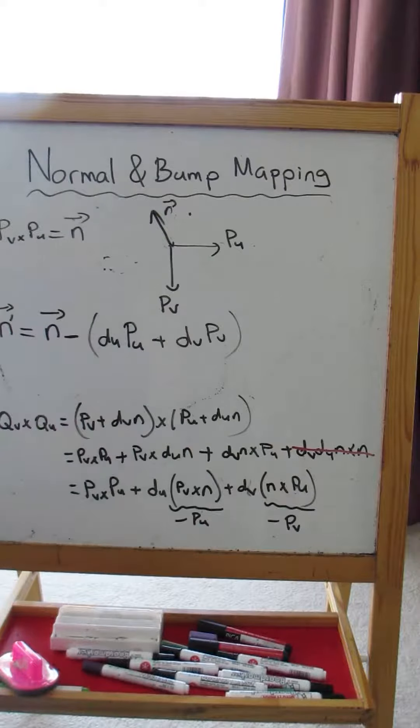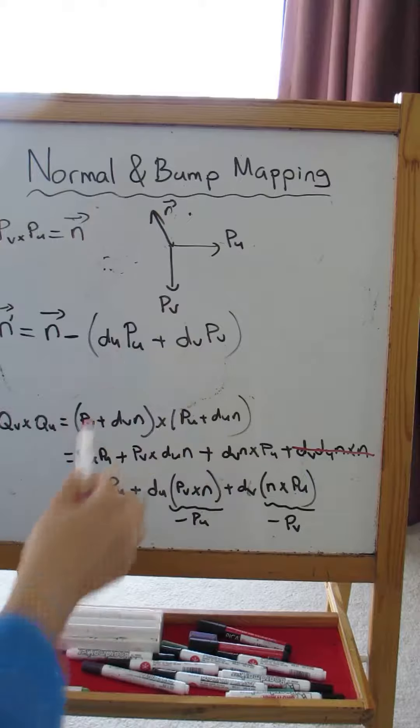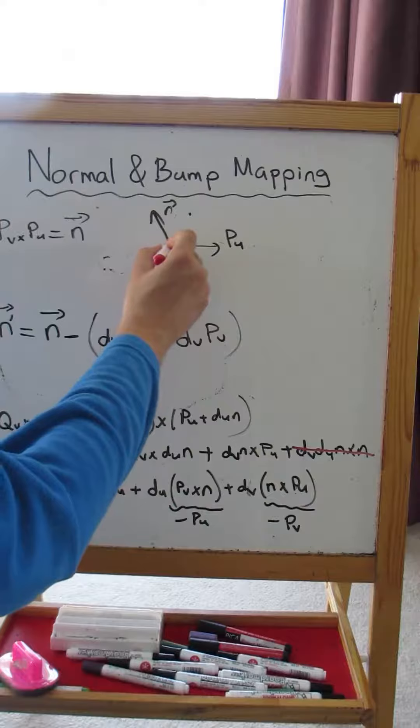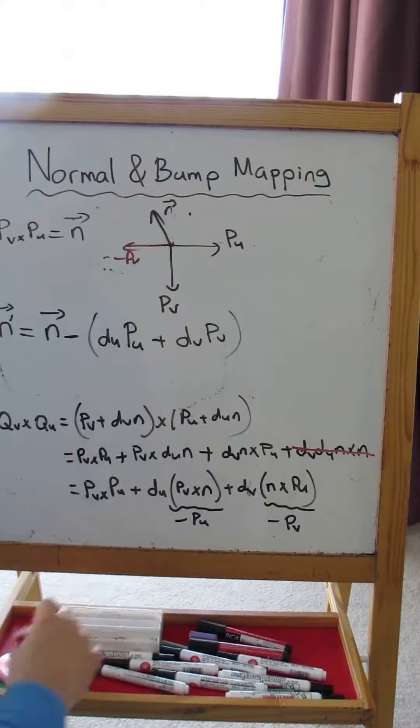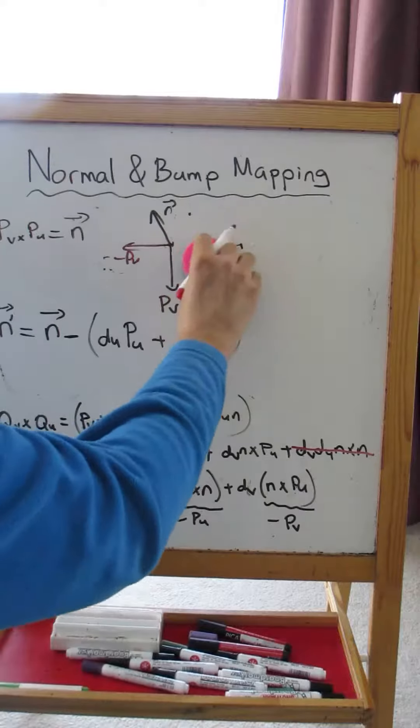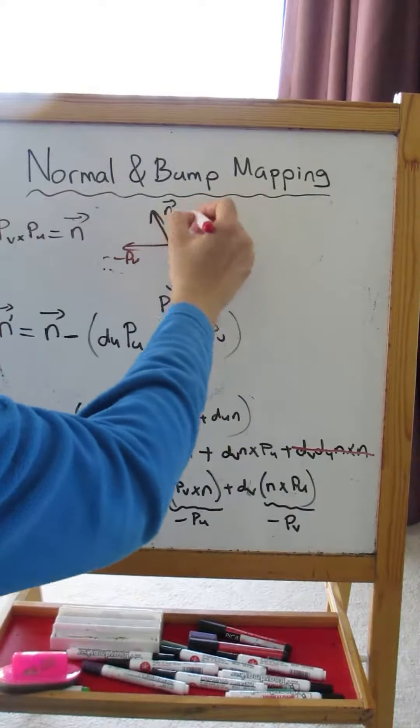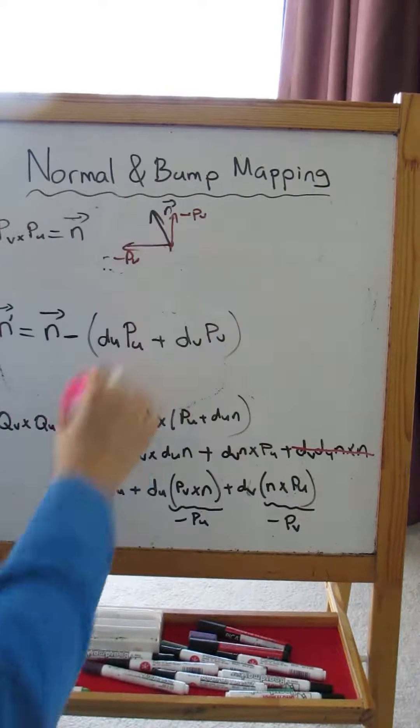is perturbed by a vector along the minus PU and minus PV directions. So let's say this is the minus PU direction, and let me clear this part, and this is the minus PV direction. Let's clear this part now.